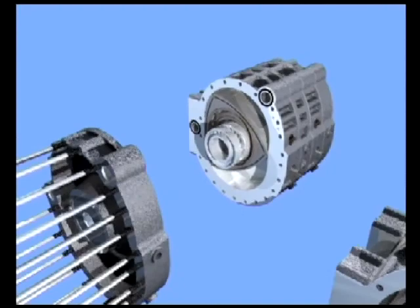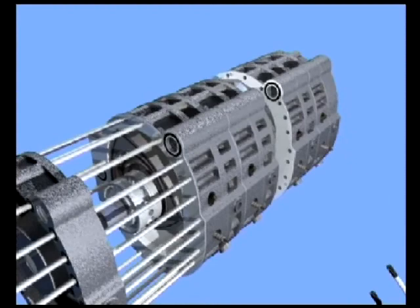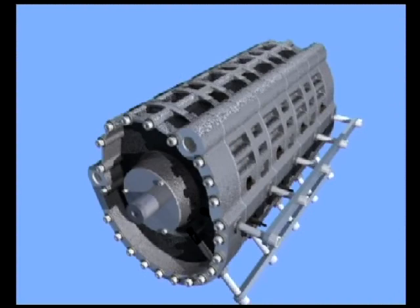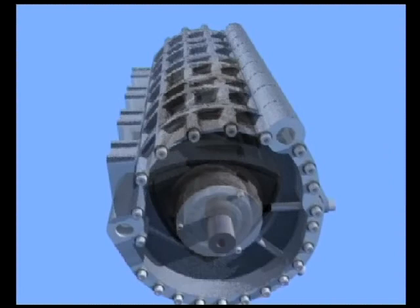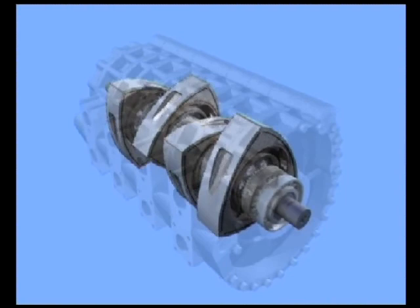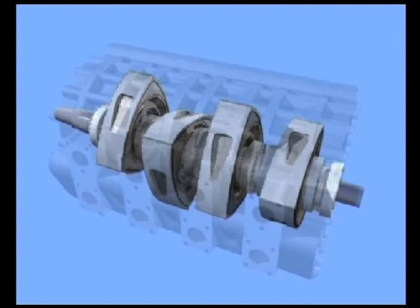Of course, this modularity can be extended to make a three, or in the following case, a four-rotor engine, once again utilizing exactly all the same parts as we have already encountered. Here we have quite simply created a four-rotor engine. With three combustion chambers per rotor, this is equivalent to a twelve-cylinder piston engine.